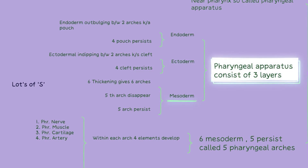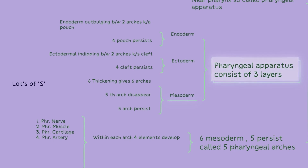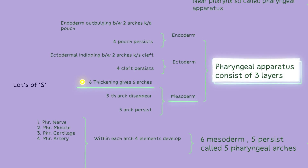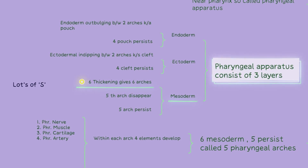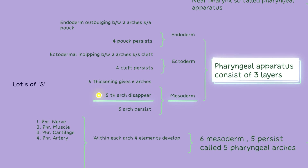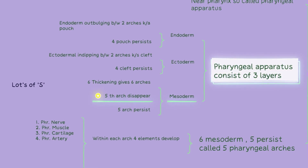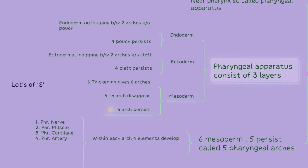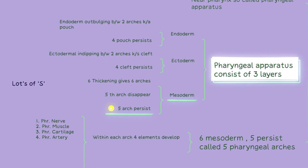The mesoderm is the middle layer of the pharyngeal apparatus. It thickens to form six bulges called pharyngeal arches. The fifth pharyngeal arch usually disappears during development, while the first four and the sixth arch persist.